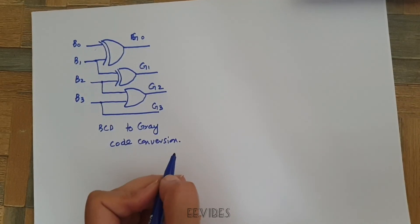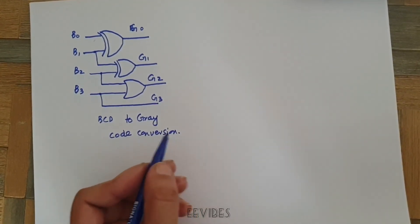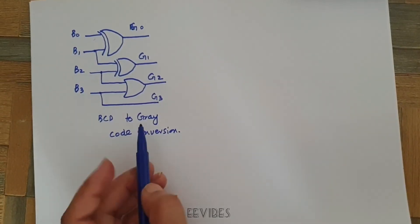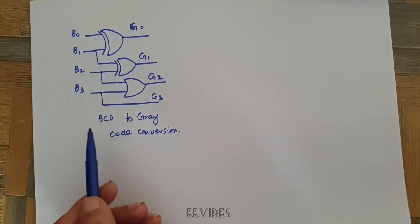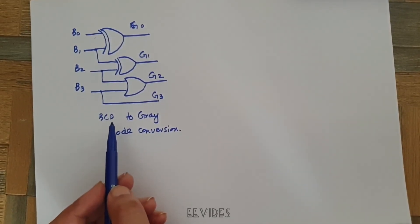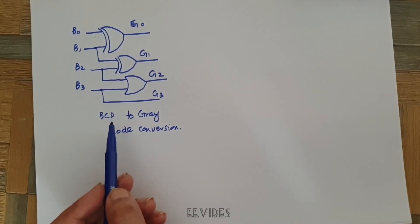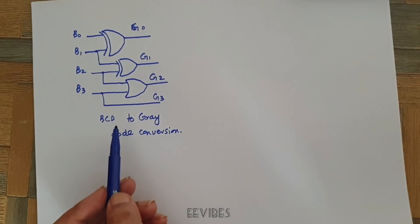If you have any query you can drop your questions in the comment box and one thing more, if you want to perform the reverse task like if you are given the Gray code and you have to construct the BCD circuit or convert it into the BCD number, adopt the same method and mark the don't care conditions for the rest of the combinations of the Gray code and you will get the required results.